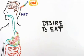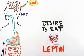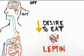Conversely, after eating, a different hormone, leptin, is released from the stomach and fat cells and interferes with NPY, further turning off the desire to eat and making you feel full.